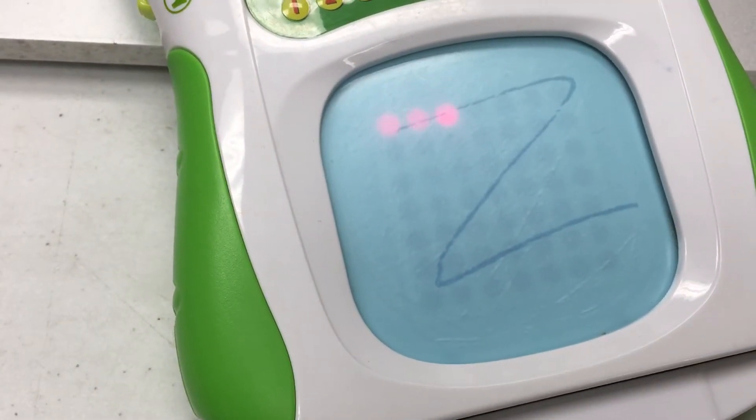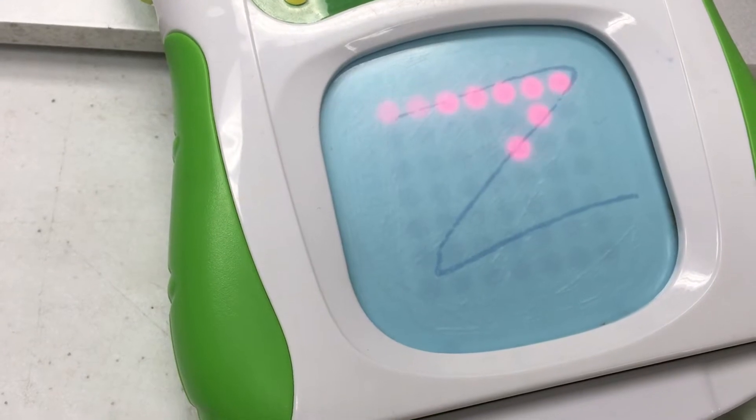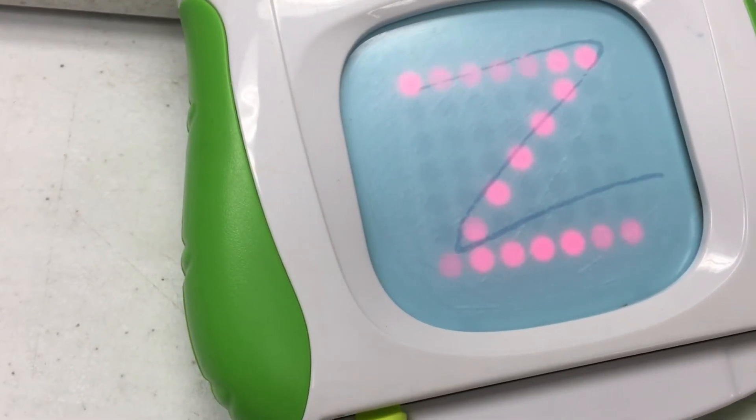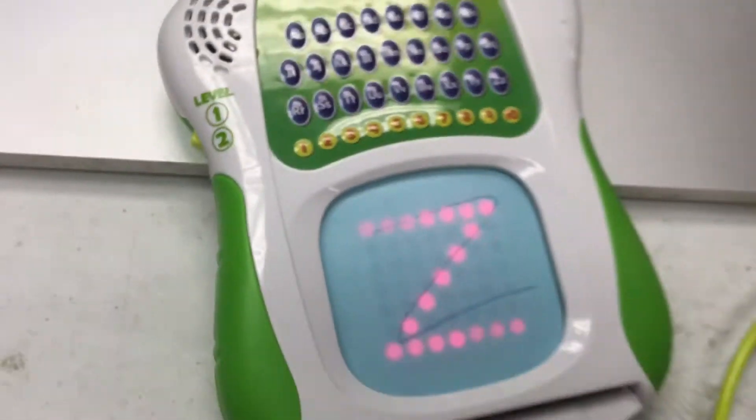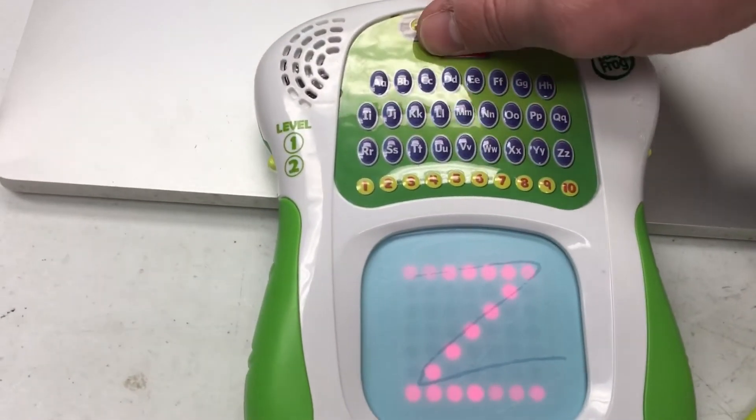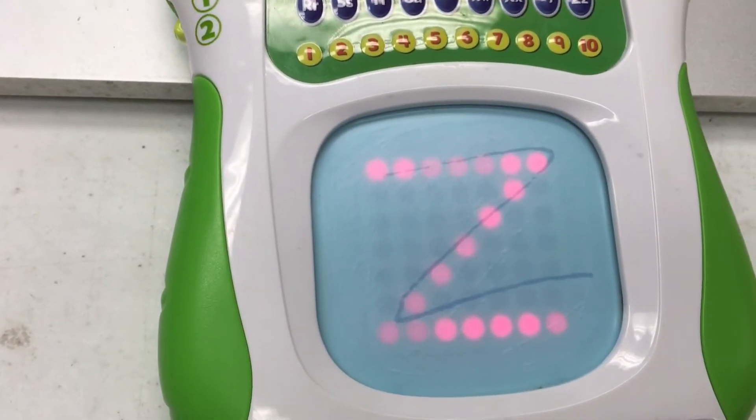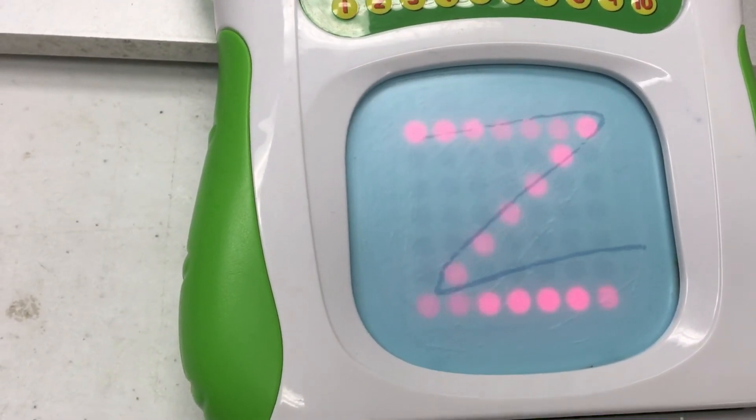Start here. Keep the stylus down and trace over the lights all the way to here. Press the red rectangle when you're finished. Z. Z makes the sound Z. Well done!